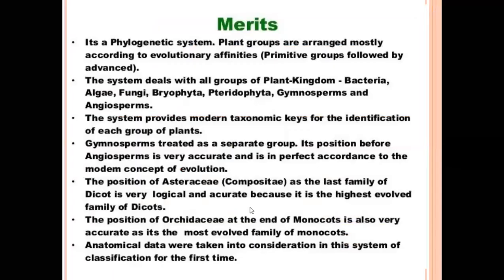The merits of Engler and Prandtl classification: it is a phylogenic system. Plant groups are arranged mostly according to evolutionary affinities, from primitive groups followed by advanced groups. The system deals with all groups of the plant kingdom, like bacteria, algae, fungi, bryophyta, pteridophyta, gymnosperms, and angiosperms. The system provides modern taxonomic keys for identification of each plant group. Gymnosperms are treated as a separate group, placed before angiosperms, which is accurate according to modern evolutionary concepts.